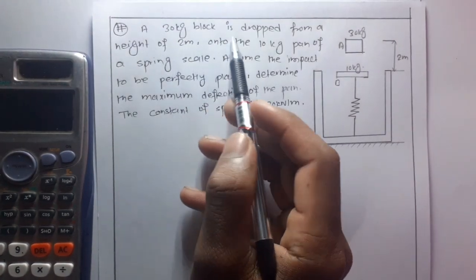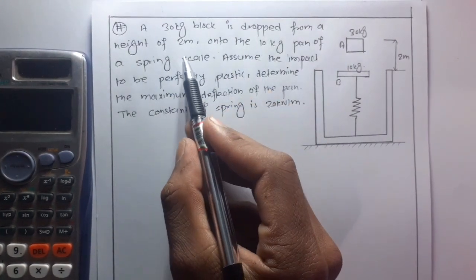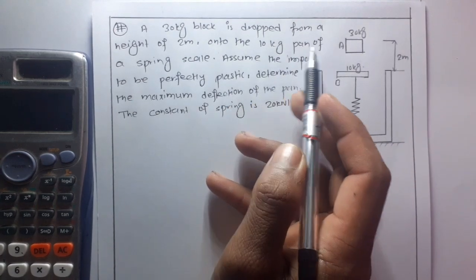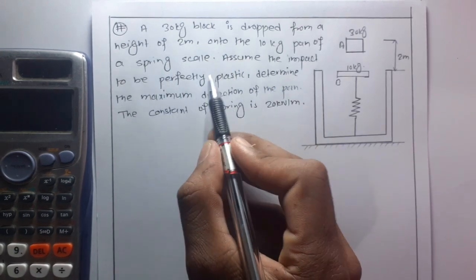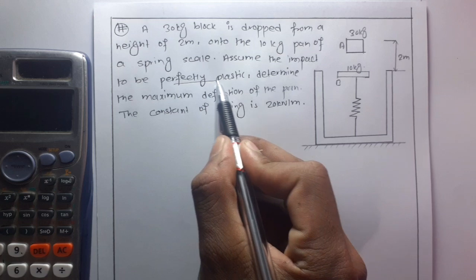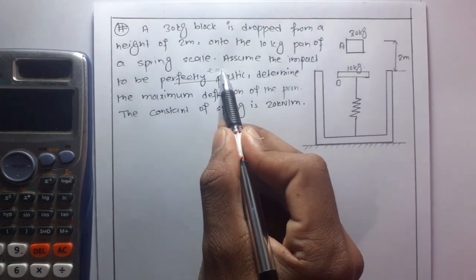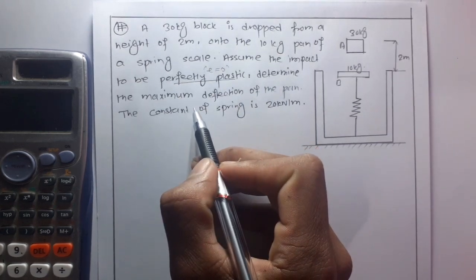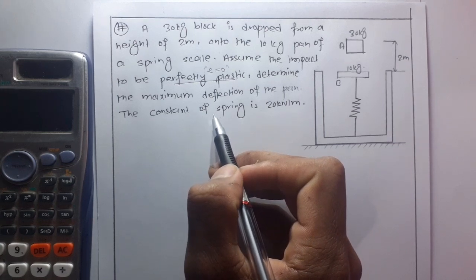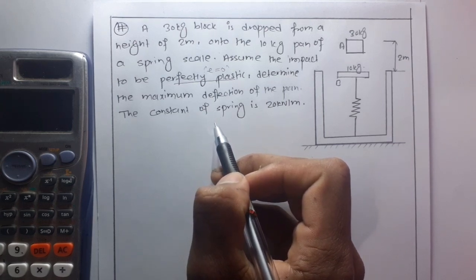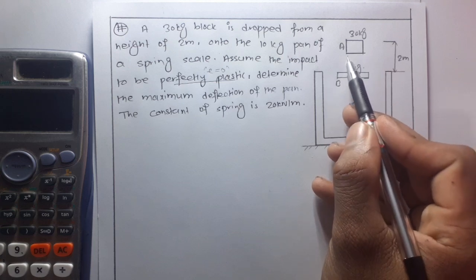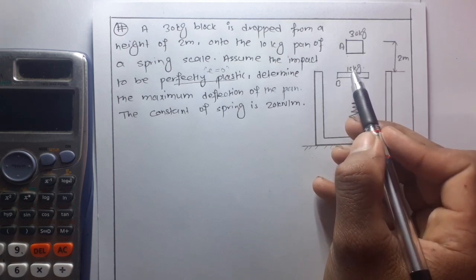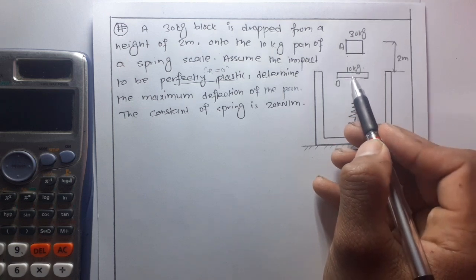The question is: a 30 kg block is dropped from a height of 2 meters onto the 10 kg pan of a spring scale. Assume the impact to be perfectly plastic — that means e is equal to zero. Determine the maximum deflection of the pan. The spring constant is given as 20 kilonewton per meter.